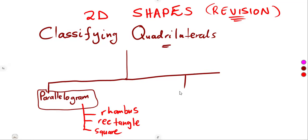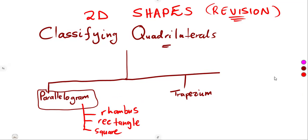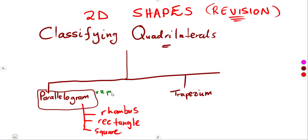We also have a trapezium, which has nothing to do with the parallelogram family. A trapezium has only one pair of parallel sides, whereas a parallelogram has two pairs of parallel opposite sides. So a trapezium is not classified under a parallelogram.